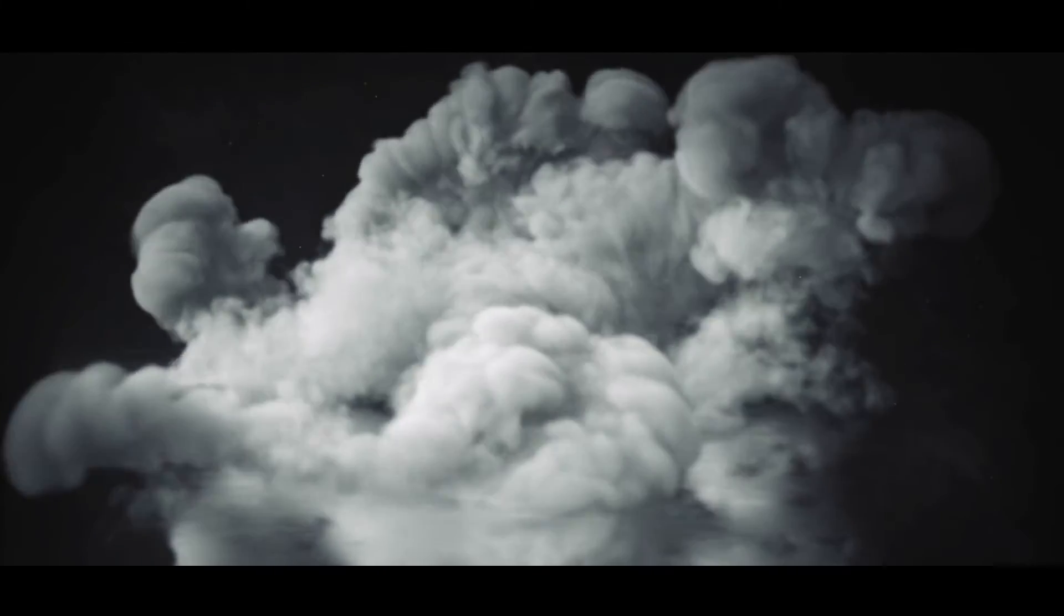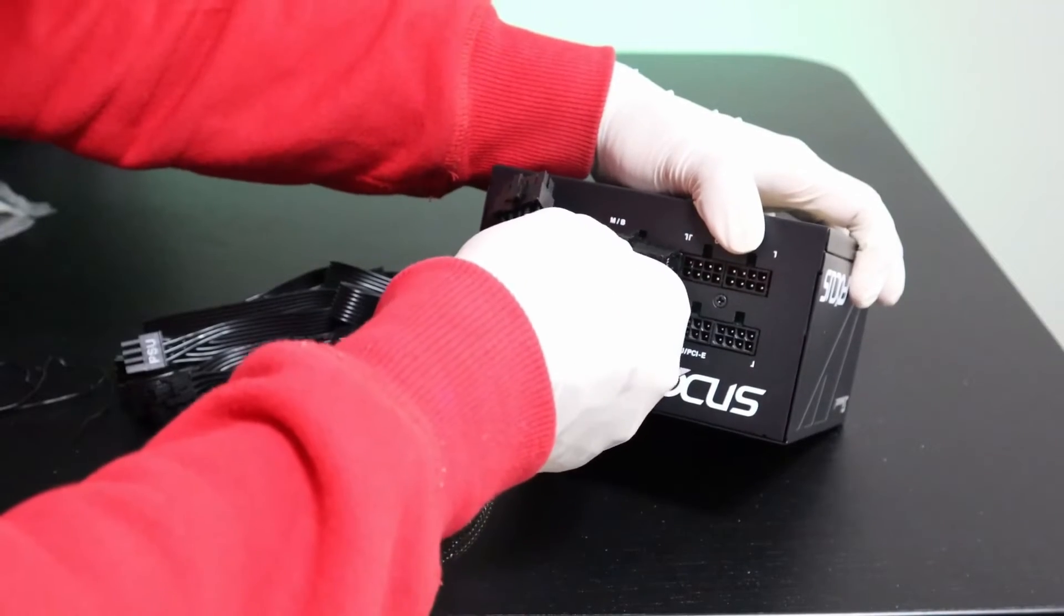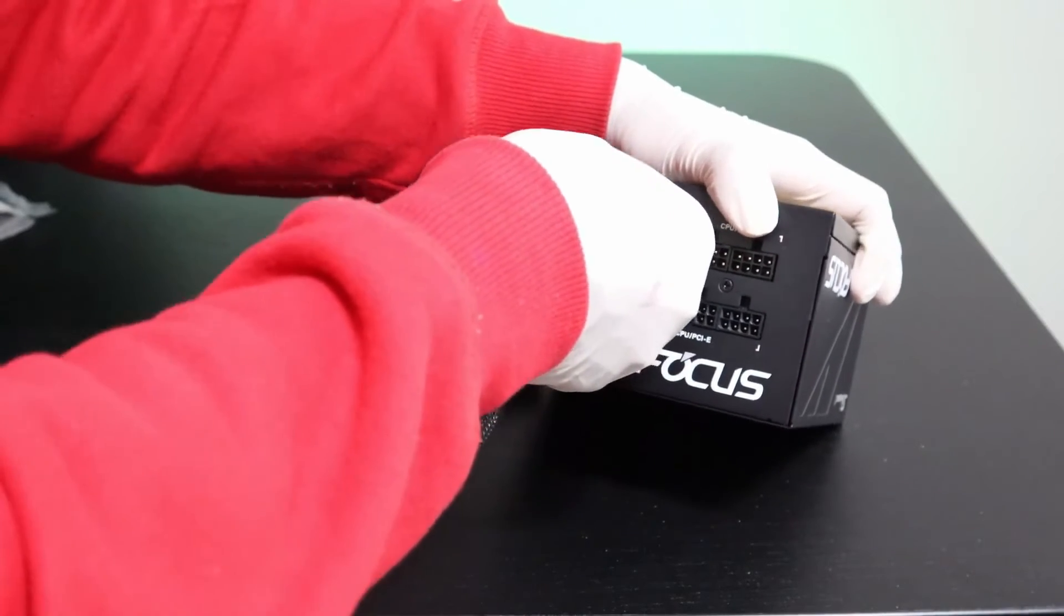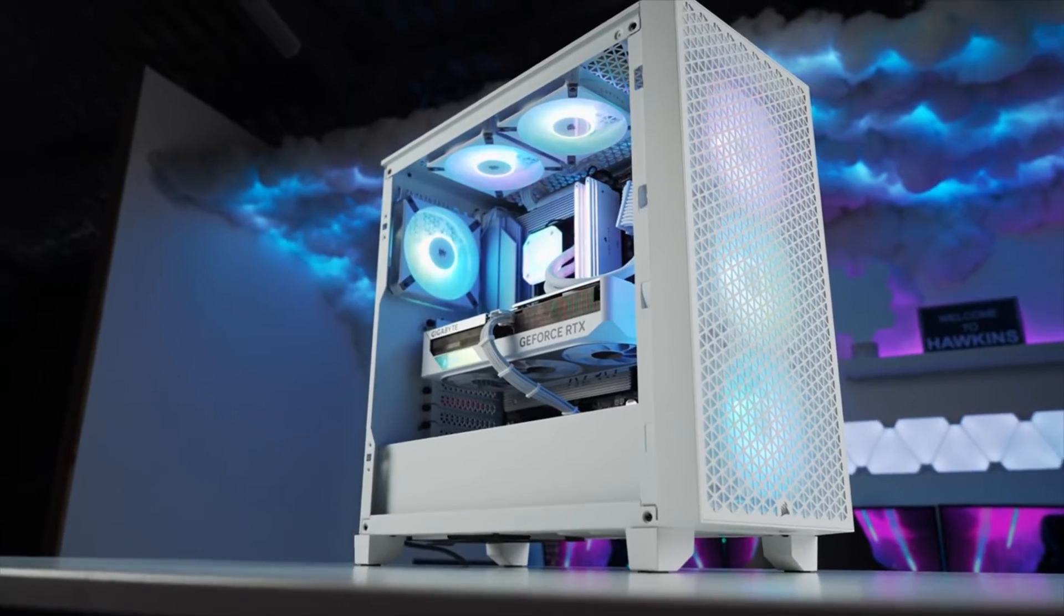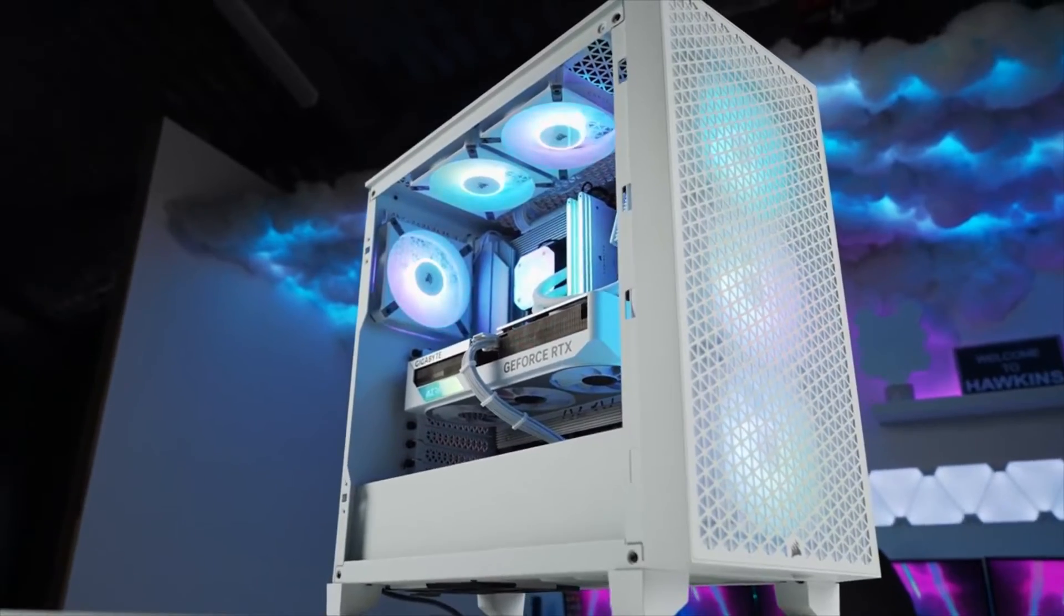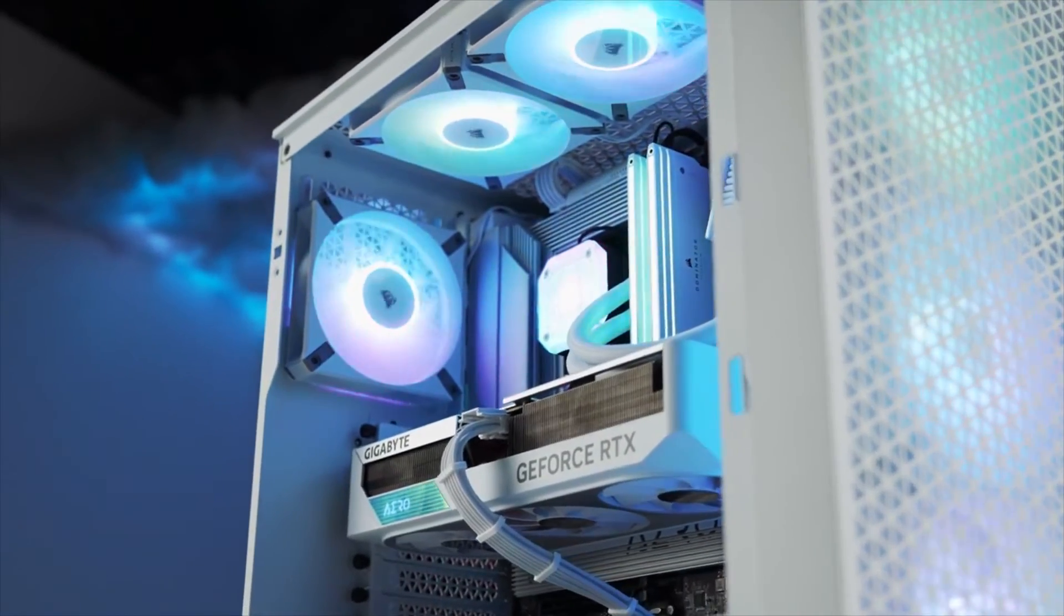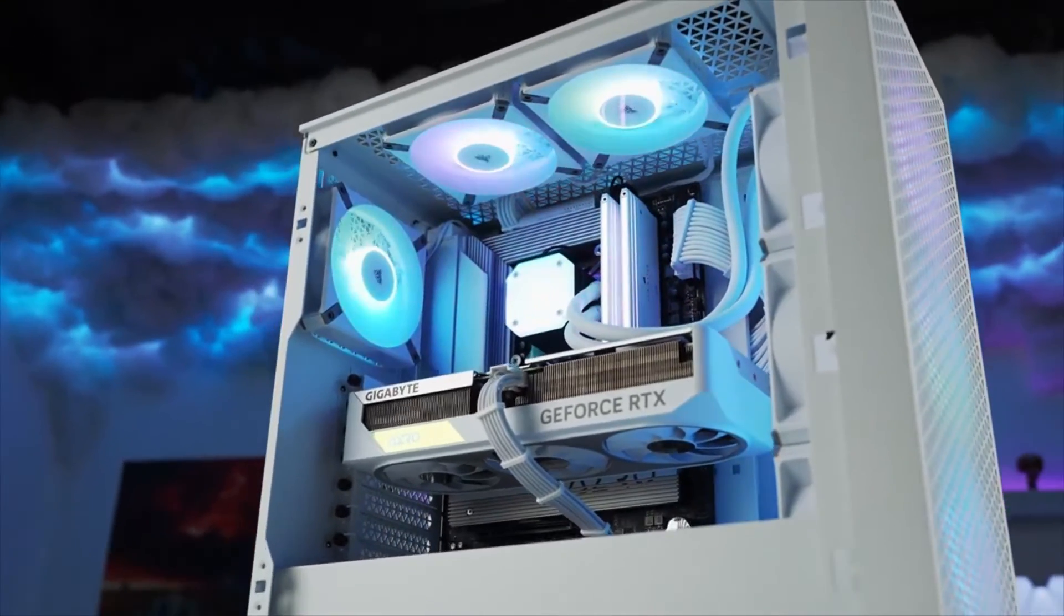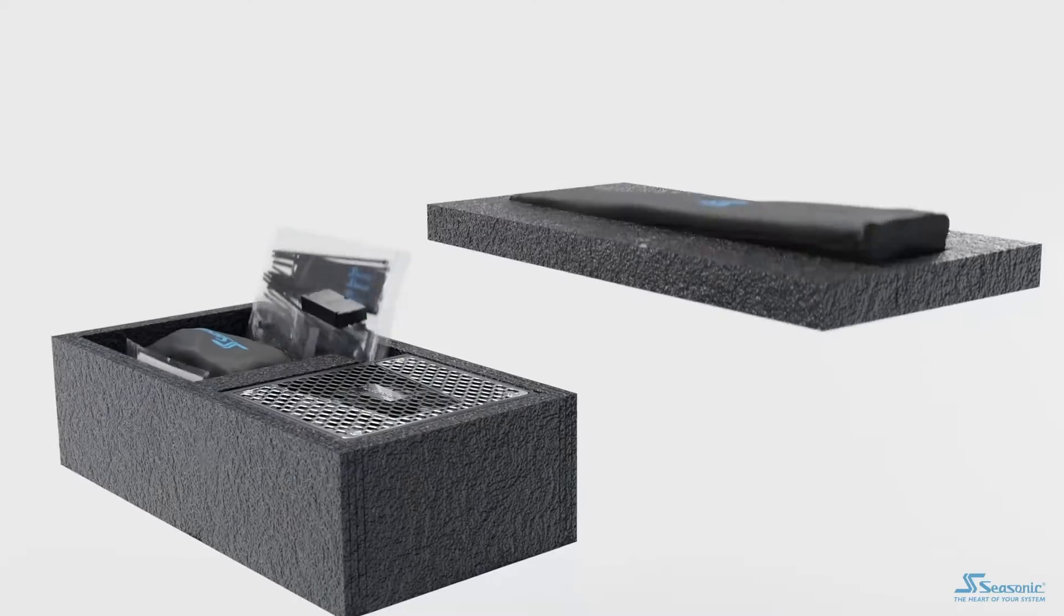Number 1: Seasonic. If you're at all familiar with power supplies, then you'll know that Seasonic is one of the top PSU OEMs on the market. Seasonic started making power supplies in the early 1980s, so they have 40 years of experience behind their products. They also produce PSUs for many major brands like Corsair and EVGA, and are recognized worldwide for consistent quality and dependability.